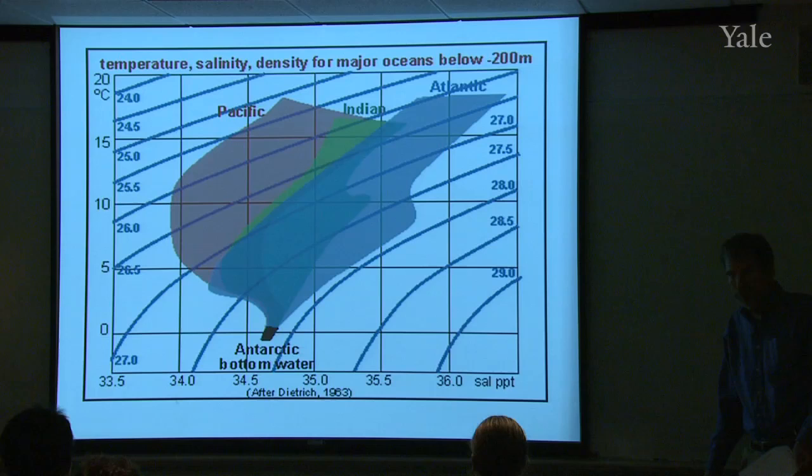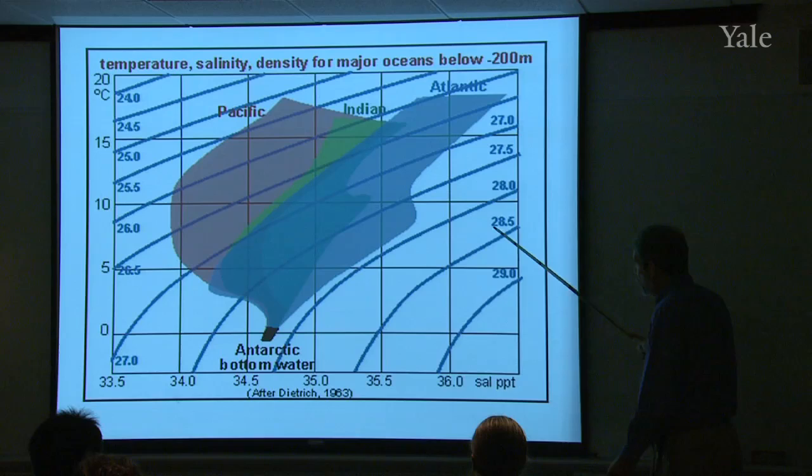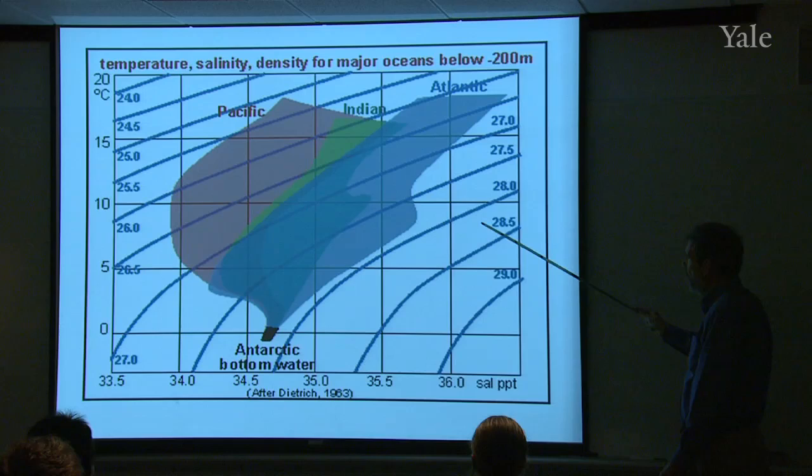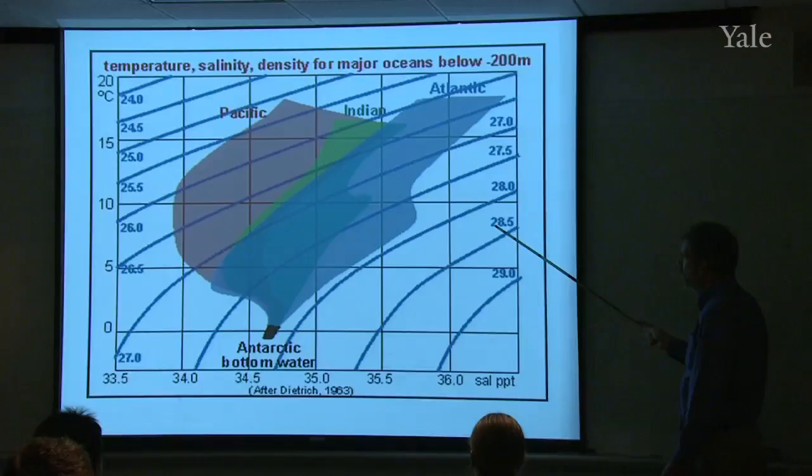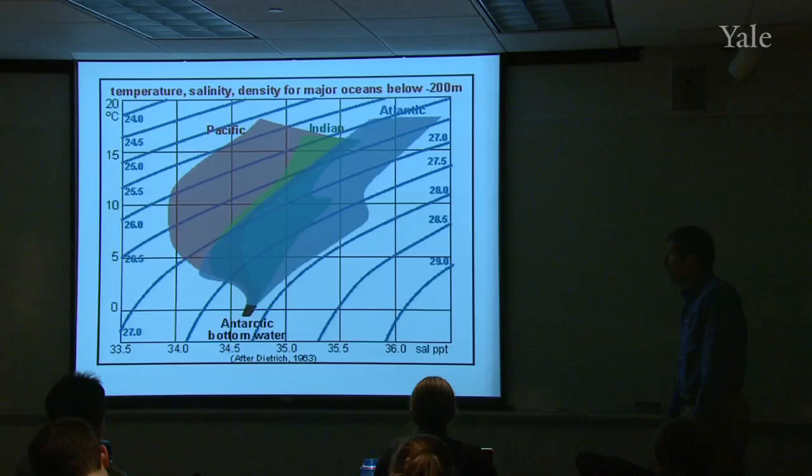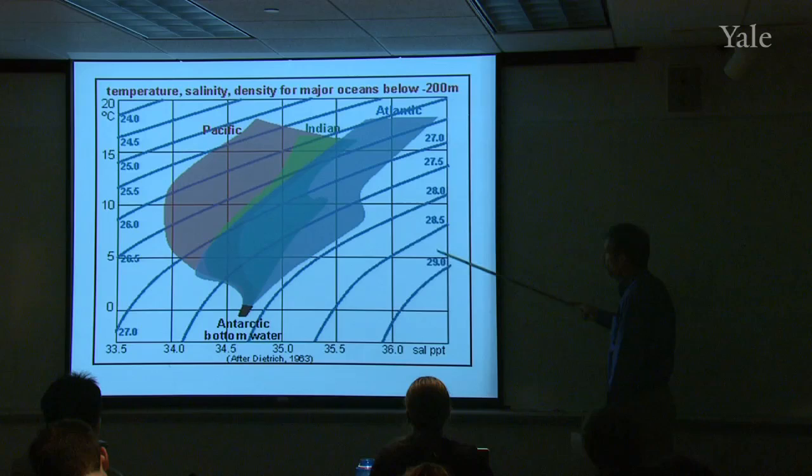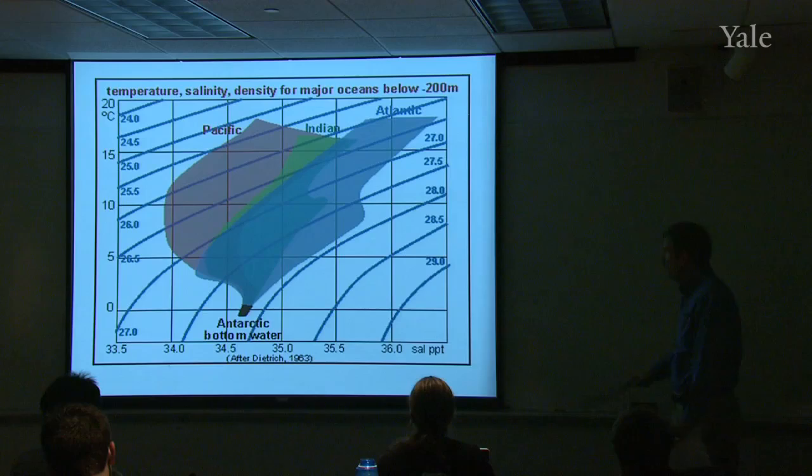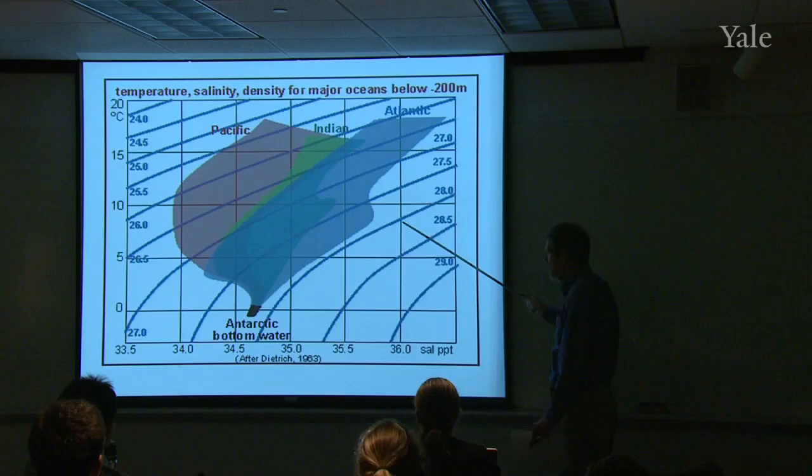And then these lines are lines of constant seawater density. And by the way, so what is this unit here? This unit is the density of seawater with the one and the zero dropped off, right? So you would read this as 1,028.5 kilograms per cubic meter. And since it only changes in those last couple of digits, we don't want to keep writing that one zero in front of all of those values. But you can see that the density is greater down here, 29, 28.5, and 28. And that corresponds to salty water and low temperatures.